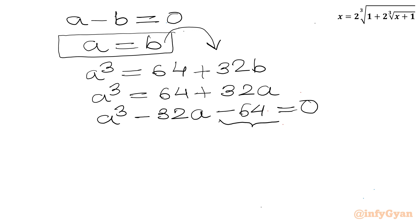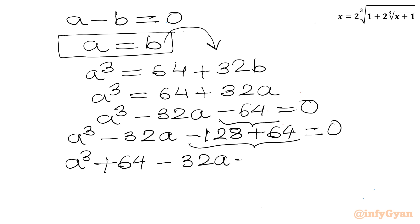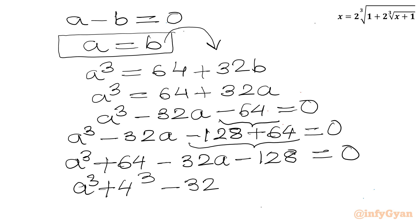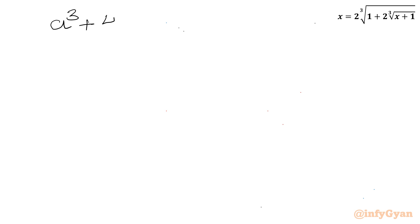Now I will split negative 64. Writing a cubed minus 32a minus 128 plus 64, rearranging to a cubed plus 64 minus 32a minus 128 equal to 0. We can apply the a cubed plus b cubed formula here, noting a cubed plus 64 equals a cubed plus 4 cubed. So a plus 4 is a factor, giving a plus 4 equal to 0 as one solution.